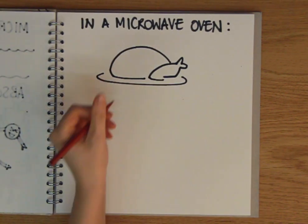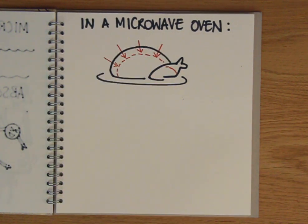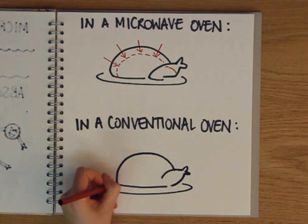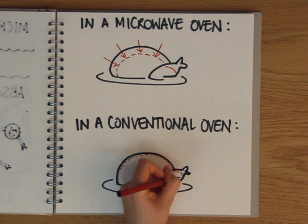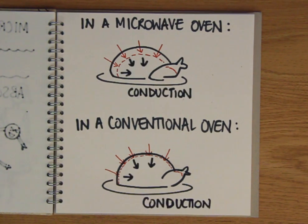This happens to all the molecules at once in the outer couple of centimetres of the food, which is why heating something up in a microwave is so much quicker than using a conventional oven, where the heat from the oven space only heats the outer couple of millimetres before being conveyed through the food by the process of thermal conduction.